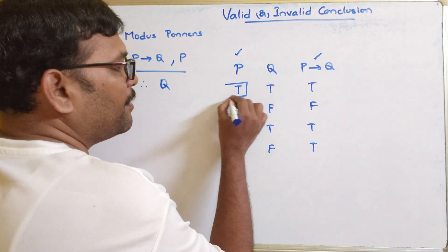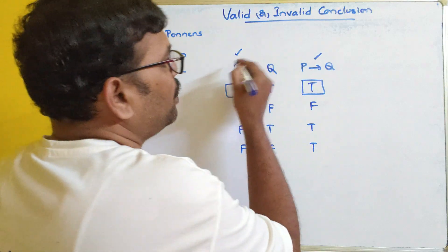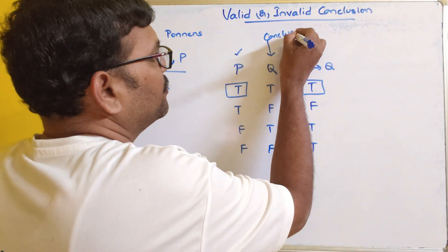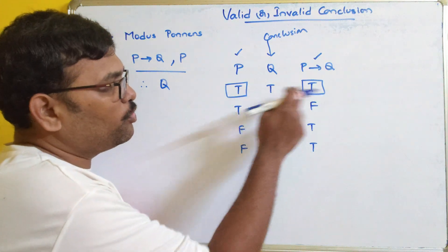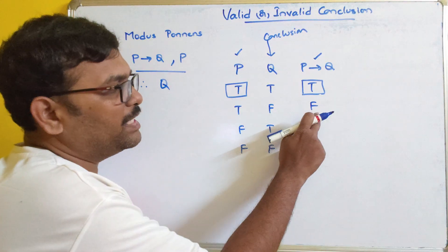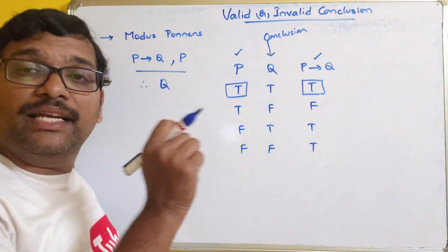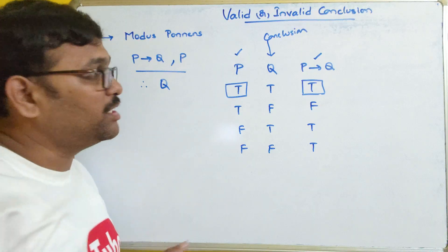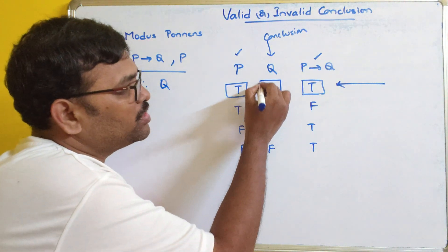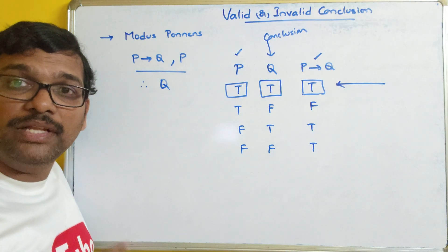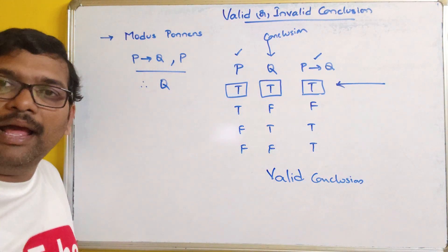Now we have to compare these two things. Here we can see true and true. The two premises are p implies q and p, and this is the conclusion q. We have to compare these two only for the truth value true. Both premises being true occurs in only one case. In that case, p is true, p implies q is true, and the corresponding conclusion q is also true. That implies it is a valid conclusion.